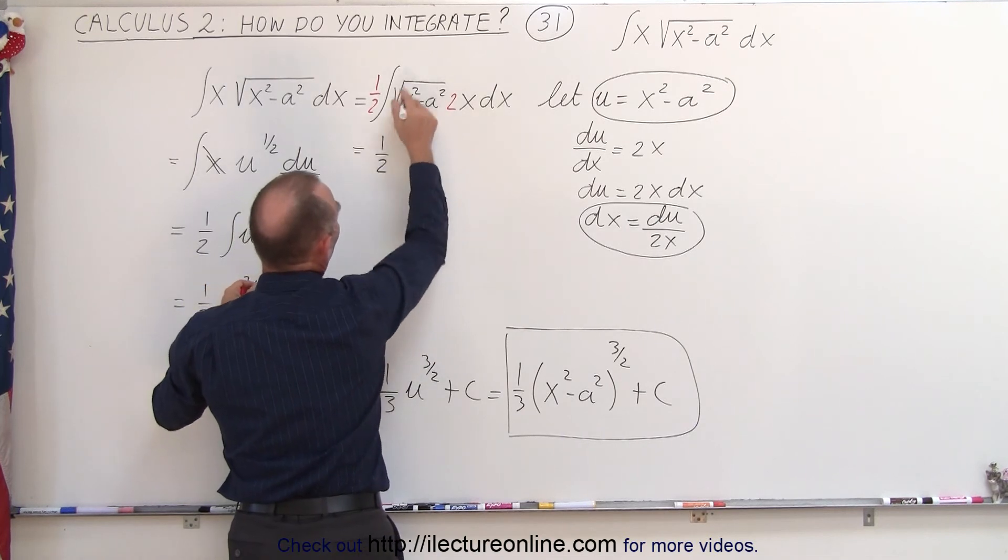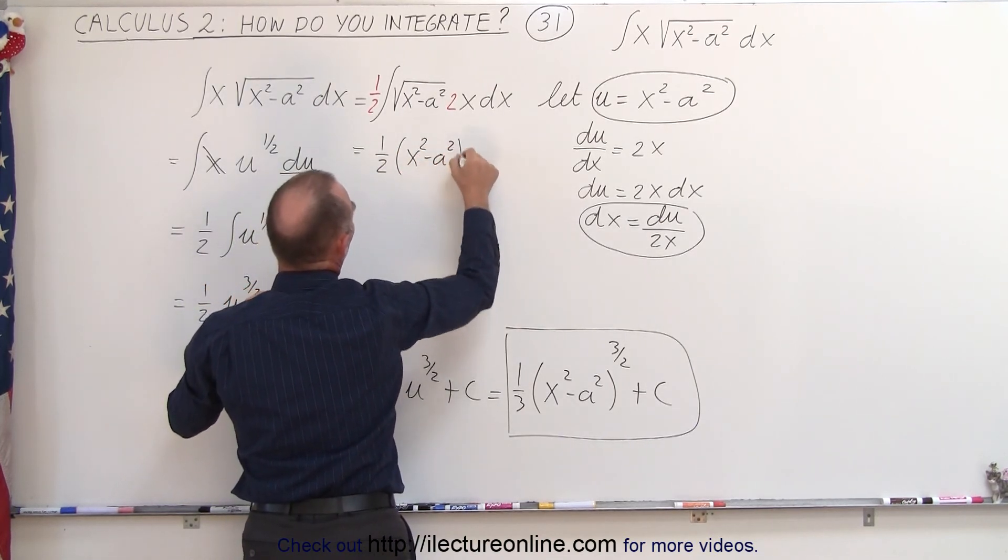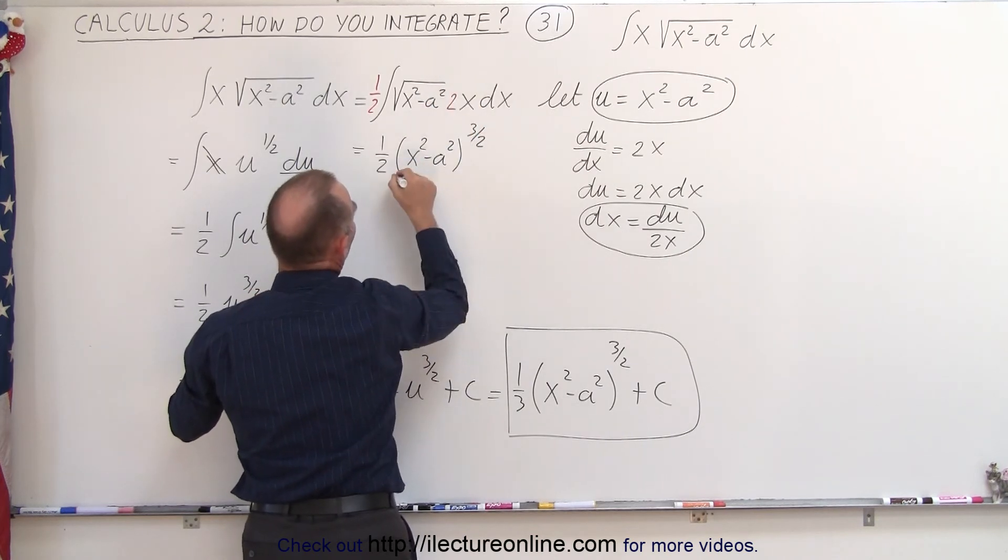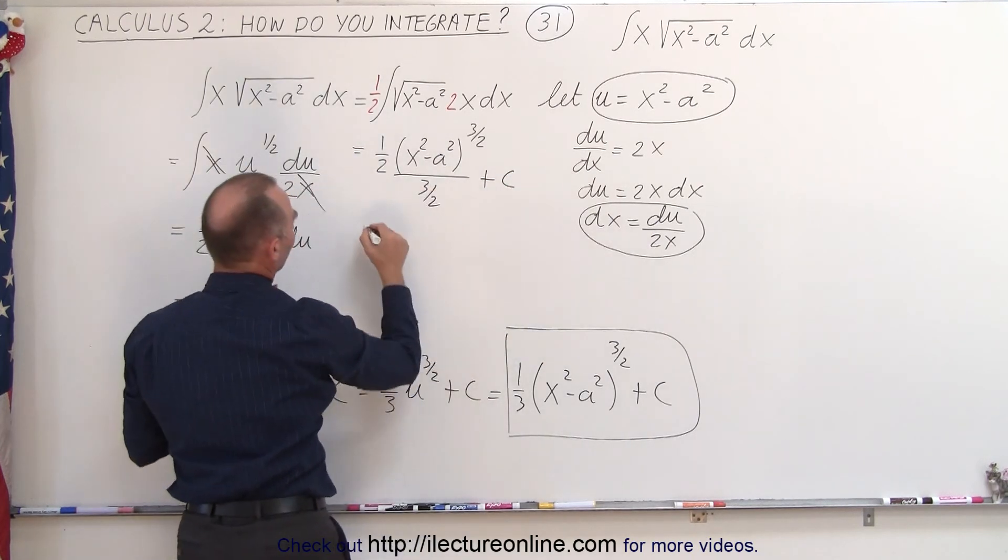So this becomes equal to 1 half times this quantity here, x squared minus a squared, to the 3 halves power, instead of 1 half power, divided by 3 halves, plus a constant of integration. And when we simplify that,